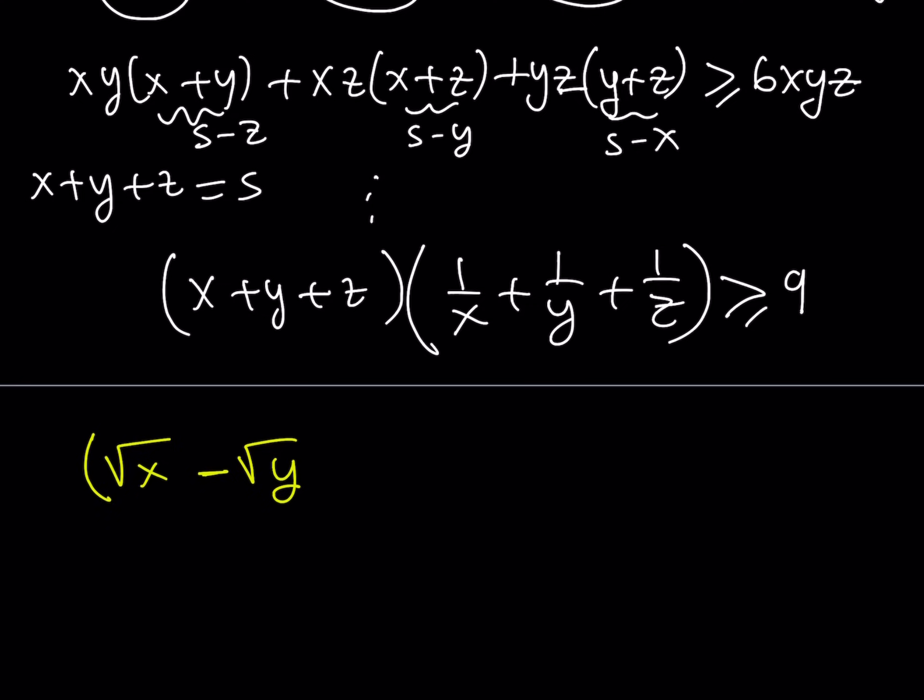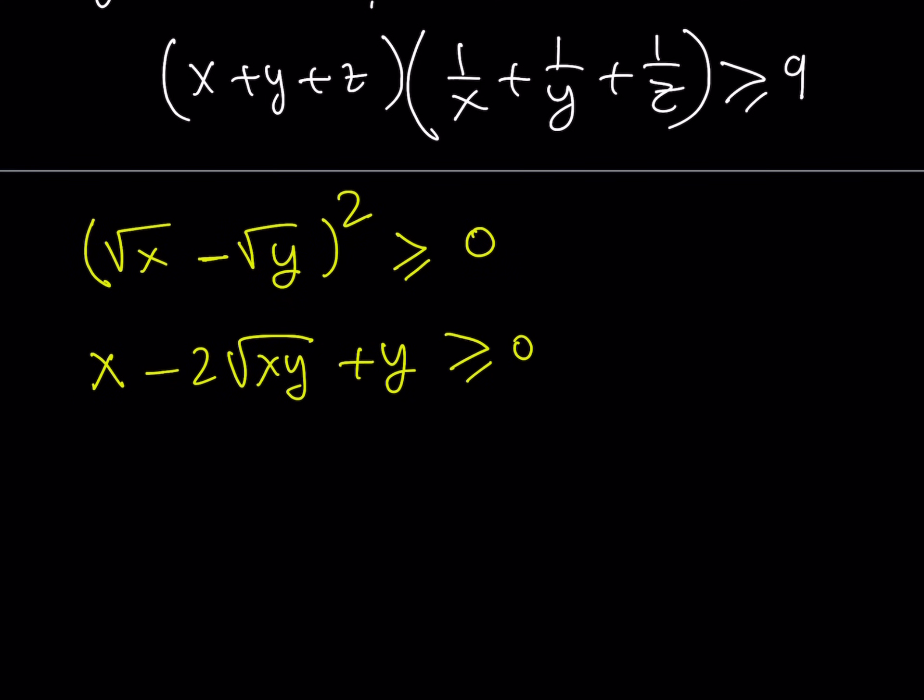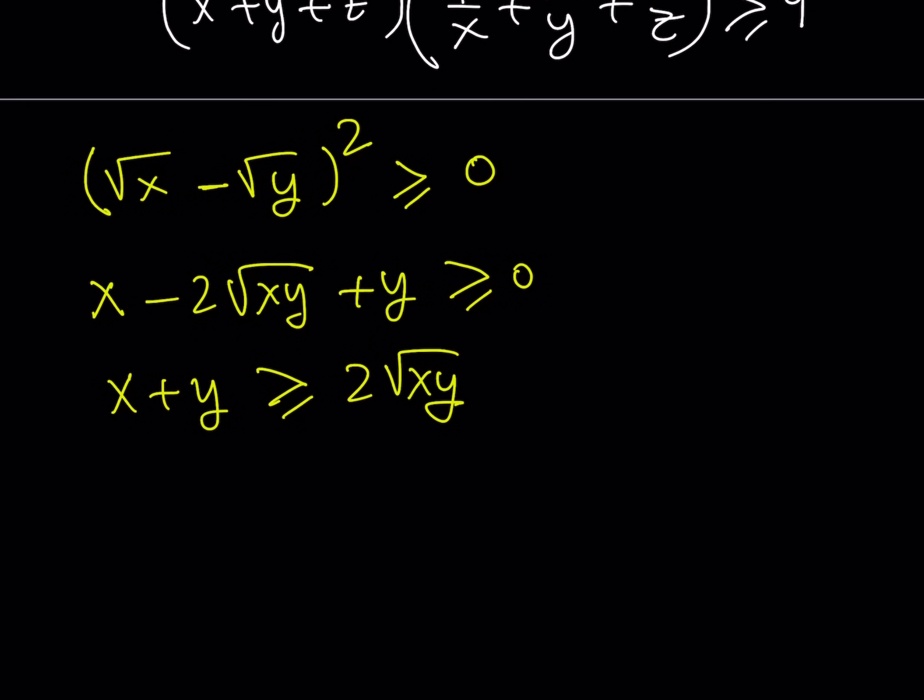Square root of x minus square root of y, squared. Obviously when you square something it cannot be negative if x and y are real numbers and this is well defined. So in our case x and y are non-negative real numbers so this is all good. But when you expand it, you get x minus 2 root xy plus y is greater than or equal to 0, and if you isolate x plus y, this is what you get.